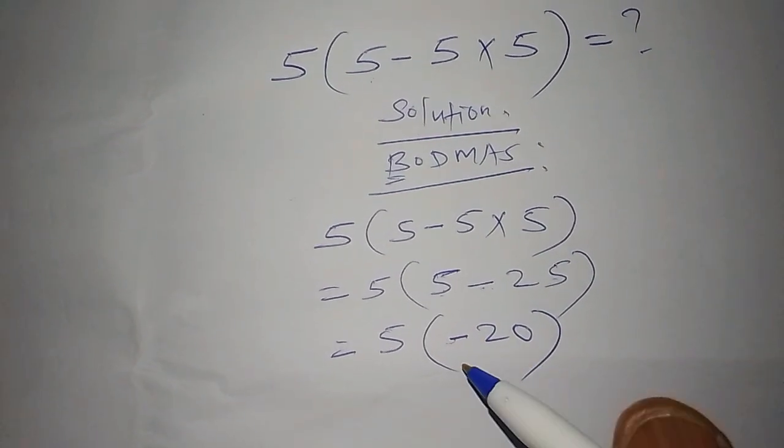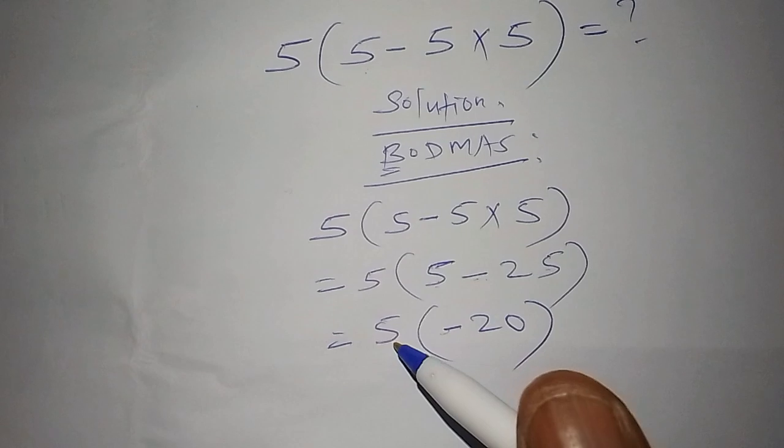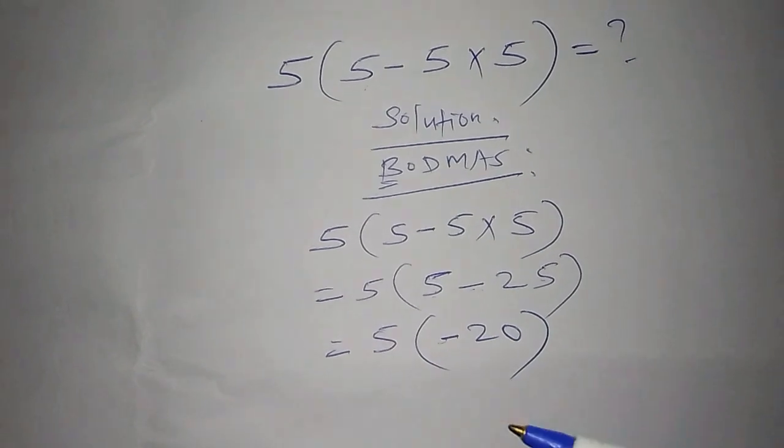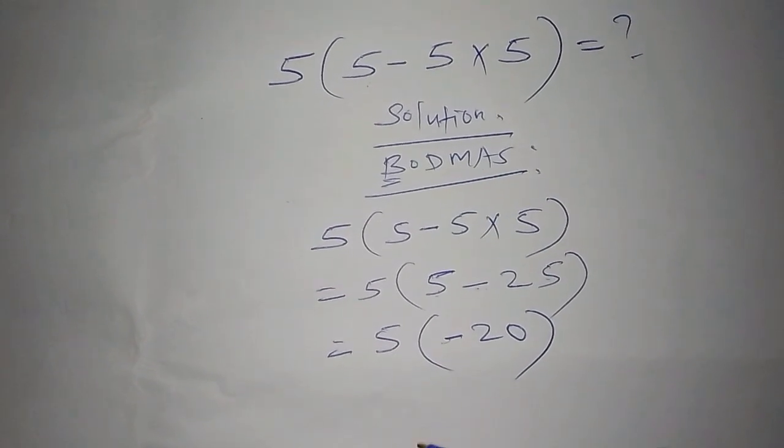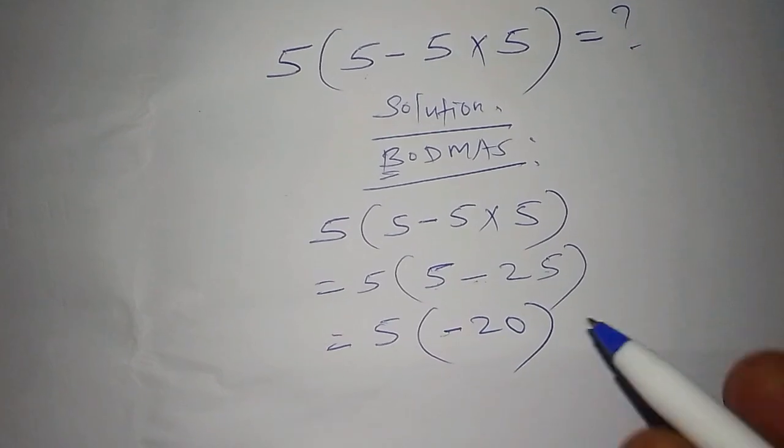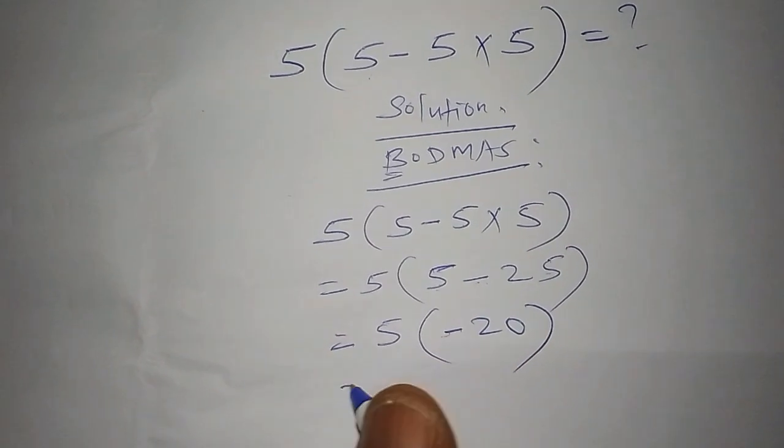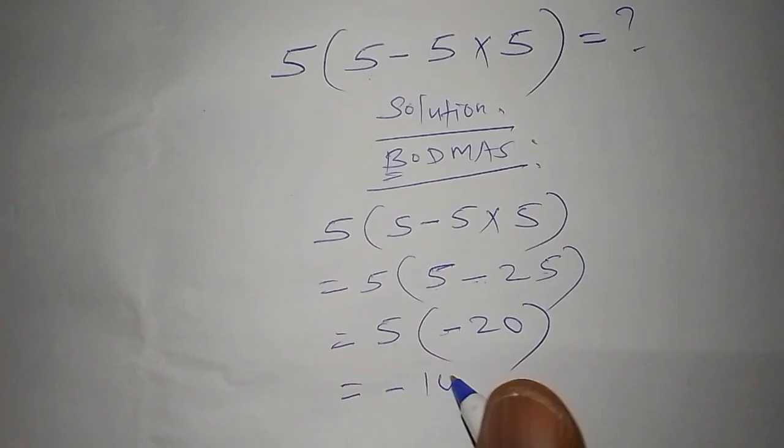What is left now? To work out the number outside the bracket with the number inside the bracket. This one is simply the multiplication. We are going to take 5 multiply by minus 20 and our final answer shall be minus 100.